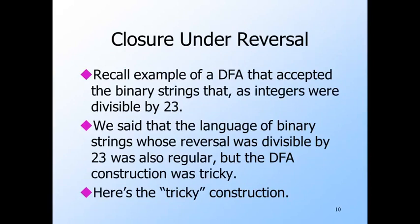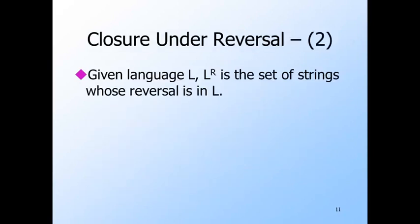Now we shall look at the operation of reversal. Recall one of our earliest examples of a regular language was the language of binary strings that, when interpreted as integers in binary, were divisible by 23. We commented then that the language of such strings that, when reversed were divisible by 23, was also a regular language, and constructing a DFA for that language is tricky. The notation we use for reversal is superscript R. That is, L superscript R means the reversal of language L. This language consists of the reversals of all the strings in L.